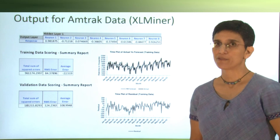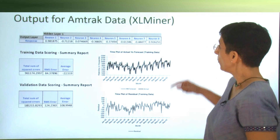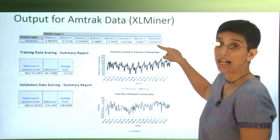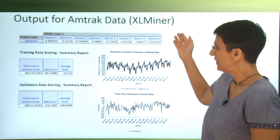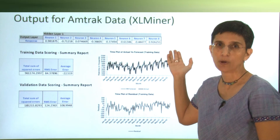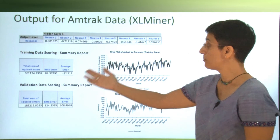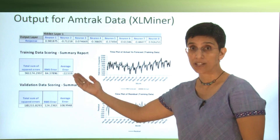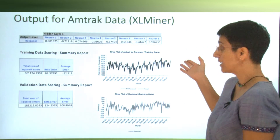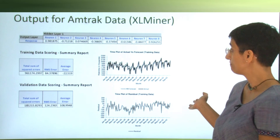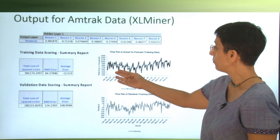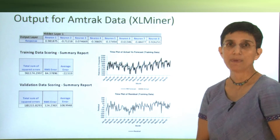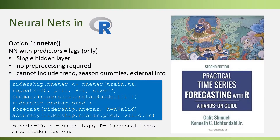Here's the output we get for the Amtrak data. We have a single hidden layer and the parameters estimated by the algorithm, which are not very interpretable. What we care more about is performance — we get the standard performance metrics and can create the usual charts. We can see how the algorithm was learning, not doing very well at first but getting better as it gets more data.